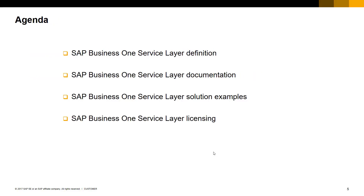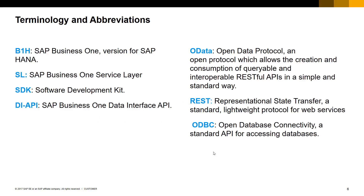We will start with the SAP Business One Service Layer definition. We will continue by describing where to find the documentation. Some solution examples are provided, and lastly we describe the licensing. Before we start with the Service Layer definition, I would like to introduce some terminology and abbreviations that will be mentioned during this session. Please come back to this slide at any point if you need clarifications.